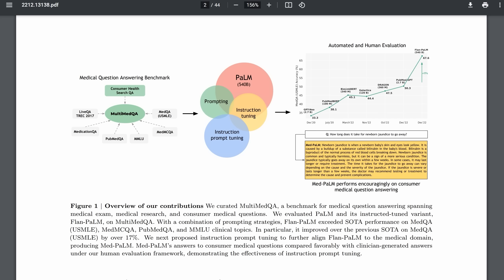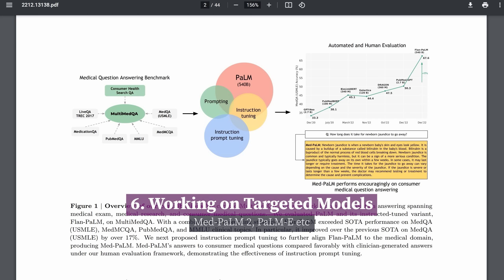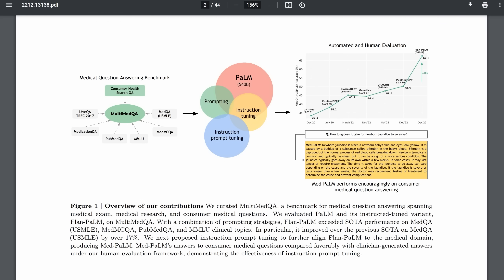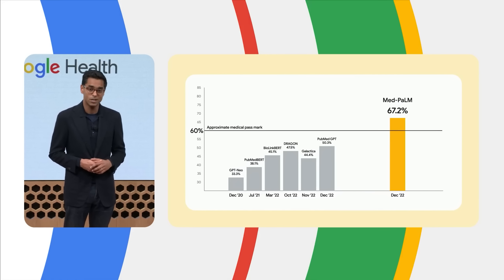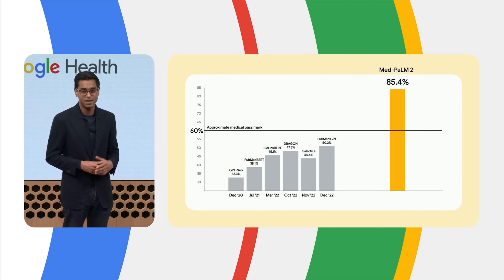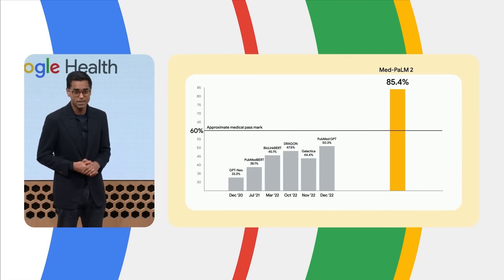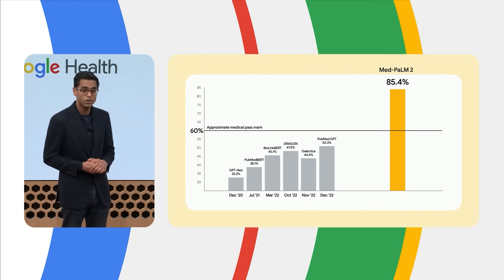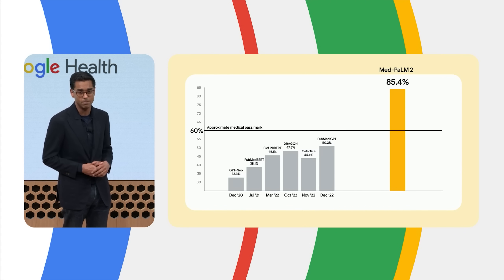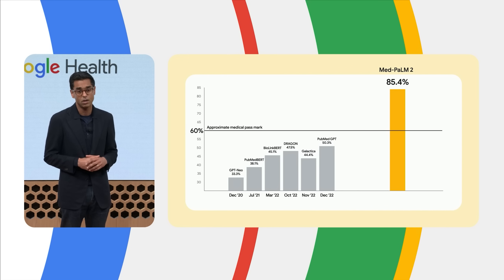My final theory is that Google may have been working on what they regard as more serious models. In December, Google released a paper on MedPalm, a language model tailored to help in a medical setting, achieving 67.6% accuracy on medical questions. They've now released MedPalm 2, reaching 85% accuracy on the medical exam benchmark — on par with expert test takers, far exceeding the passing score, and an 18% leap over MedPalm. MedPalm 2 also performed impressively on Indian medical exams and is the first AI system to exceed the passing score on those challenging questions.